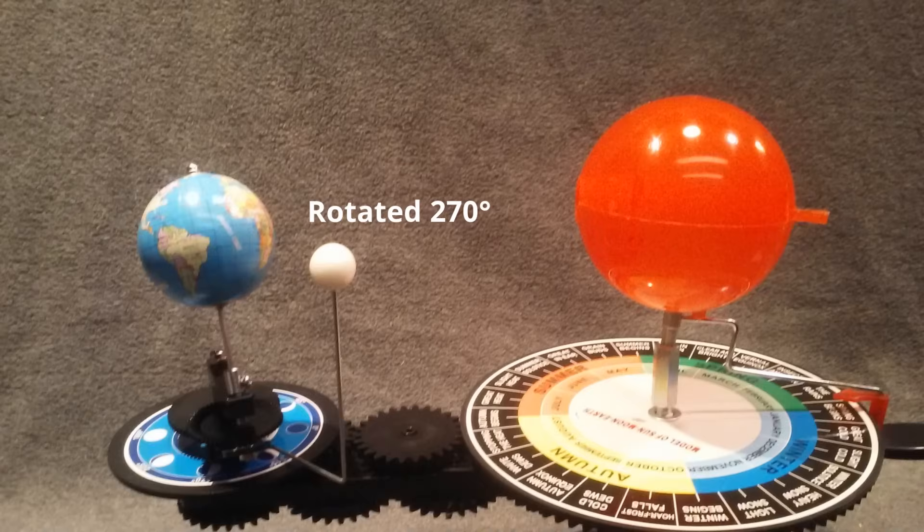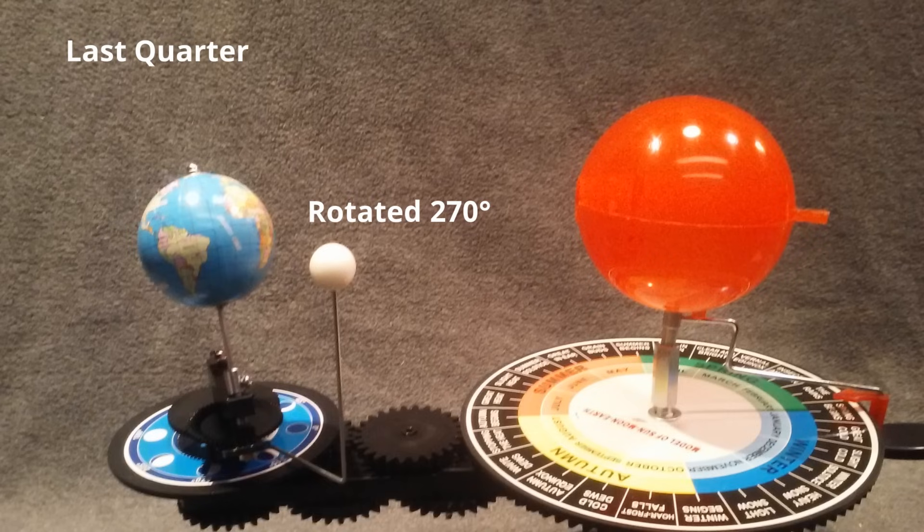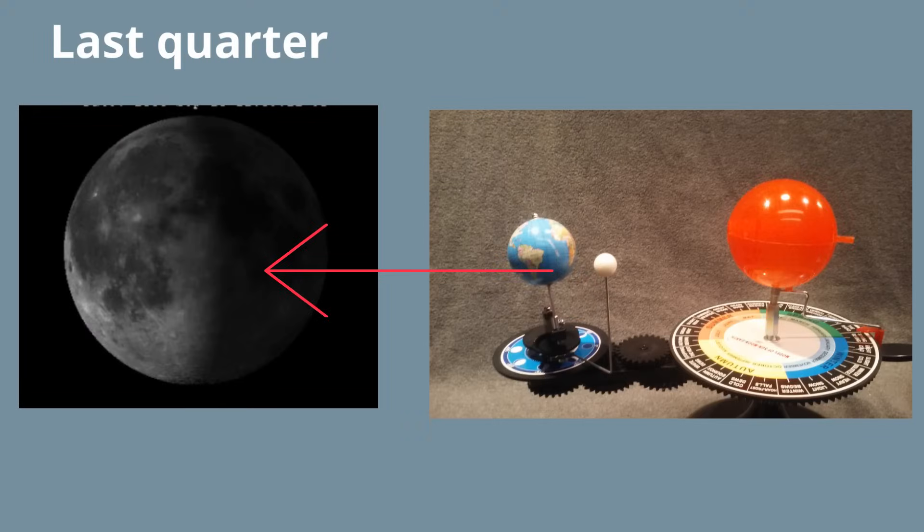After 21 days, the moon has now traveled 270 degrees and is at last quarter. Here's the alignment. The light is now on the left. And I remember, if you got last, you got left behind.